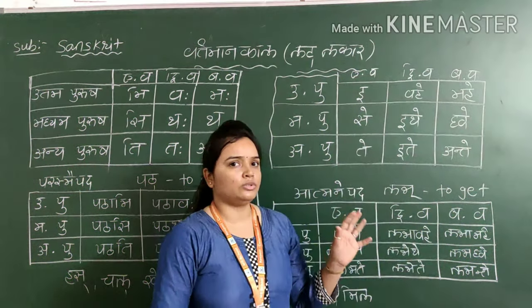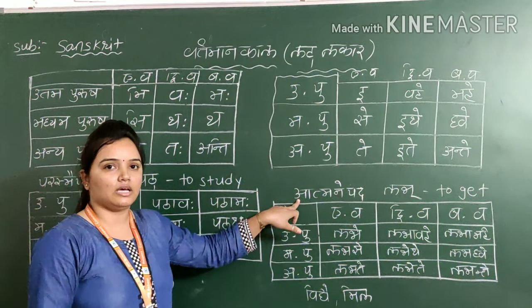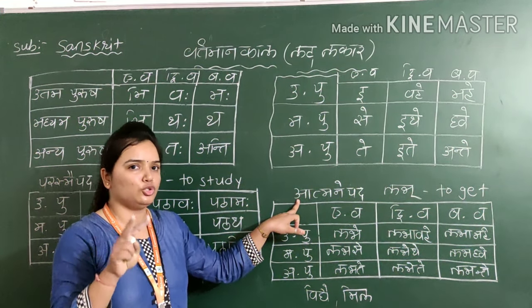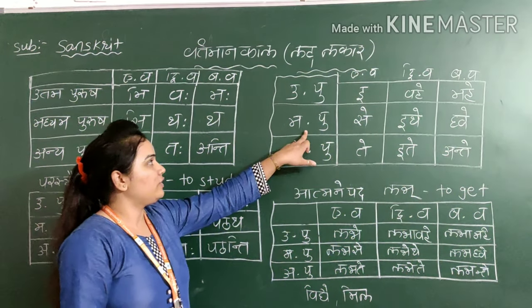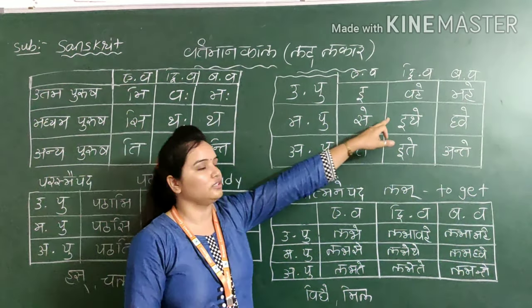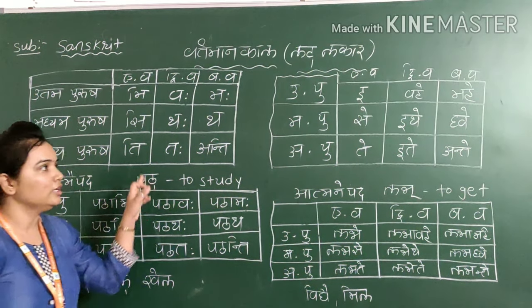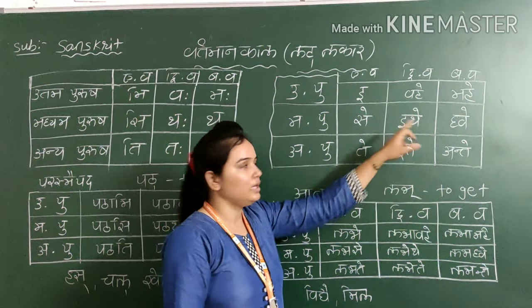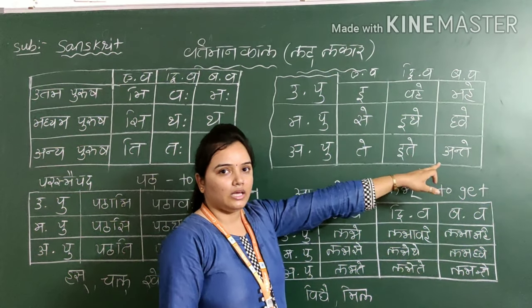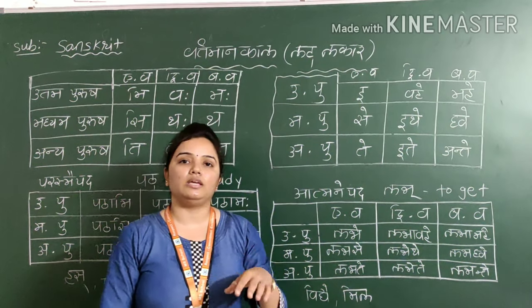Now friends, students, we will see the table of Atmanepad. As I told you earlier, it is divided into two parts: Atmanepad and Parasmapad. Atmanepad has a different table. Same like Uttam Purush, Madhyam Purush, Anya Purush, Ek Vachan, Dvivachan, Bahuvachan. So the suffixes are: e, vahe, mahe, se, ithe, dwe, te, ithe, adhi. Again I will revise: e, vahe, mahe, se, ithe, dwe, te, ithe, adhi.